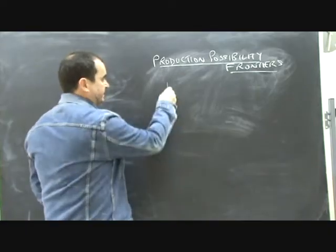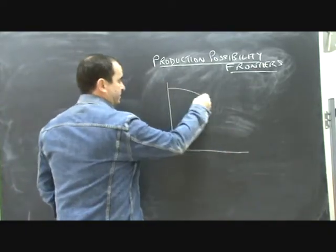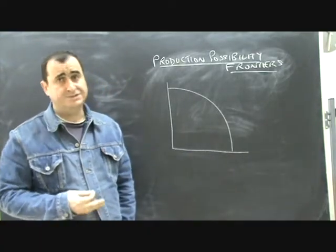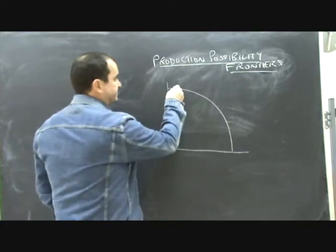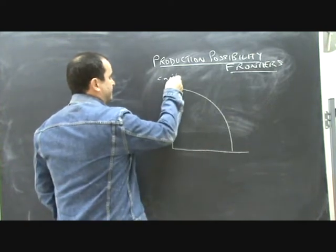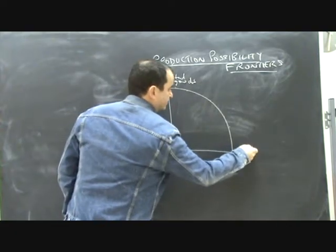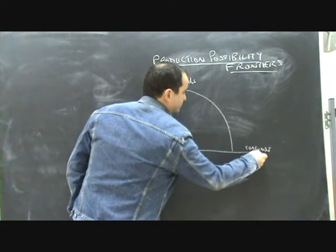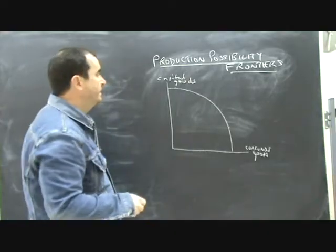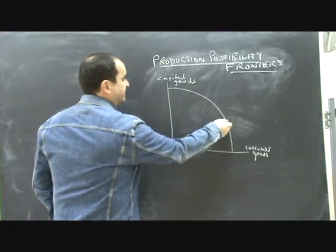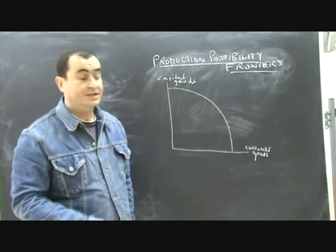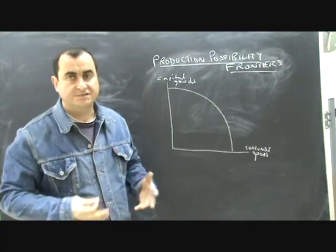Production Possibility Frontiers represent the potential output of an economy. Every point on this curve represents a combination of goods, let's call them capital goods and consumer goods. In other words, all potential goods produced by an economy given its limited resources of land, labour and capital. Every point on this curve represents a combination of some quantity of capital goods and some quantity of consumer goods that can be made given the existing resources, given the current state of technology.